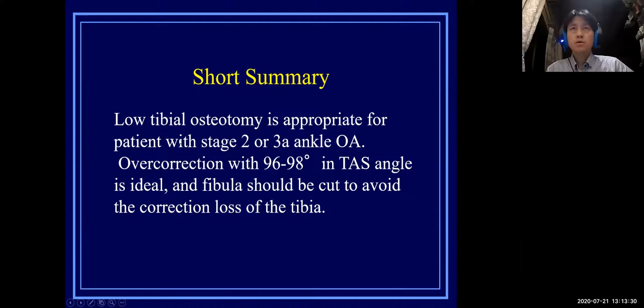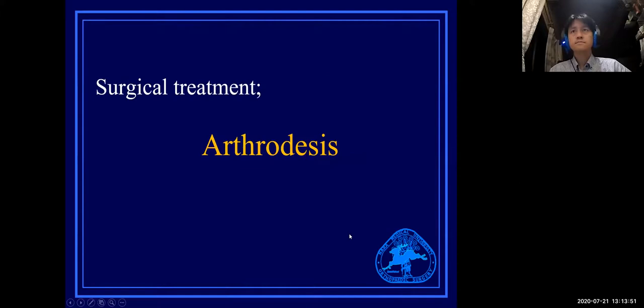In short summary: low tibial osteotomy is appropriate for patients with stage 2 or 3A ankle OA. Over-correction to 96–98 degrees in TAS angle is ideal, and the fibula should be cut to avoid correction loss of the tibia.